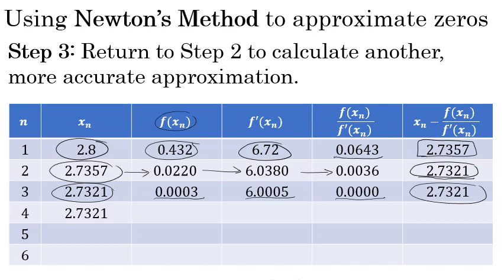Newton's method can be used to find the zero as precisely as you would need it. In this case, if I'm looking for four decimal places, I found it. The zero between x equals 2 and x equals 3 in the original function to four decimal places, by Newton's method, is 2.7321.